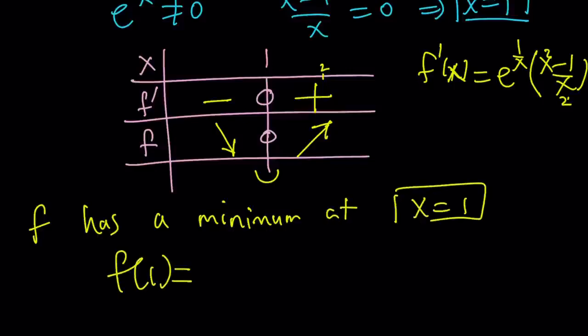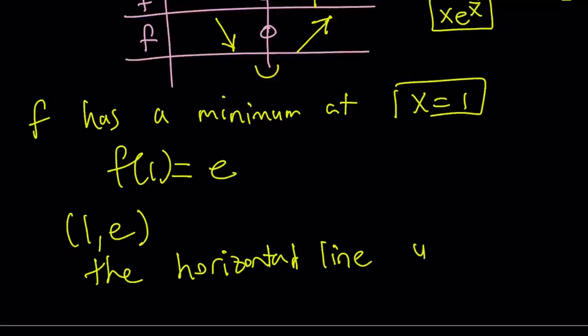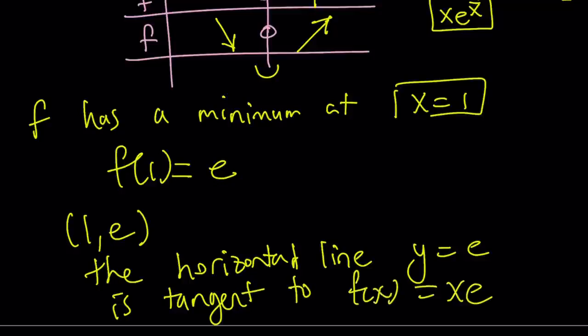But let's go ahead and evaluate f of 1. If you replace x with 1 in the function, the original one, remember that was x times e to the power of 1 over x, that was f of x. If you replace x with 1, you're going to get e. So, f has a minimum at x equals 1, the minimum value is e, therefore 1, e is a minimum. In other words, the horizontal line, y equals e is tangent to f of x equals x e to the power of 1 over x at x equals 1.